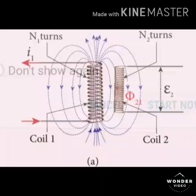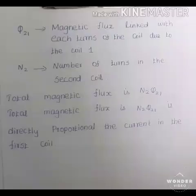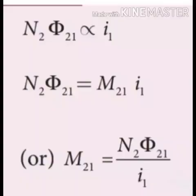Consider two coils placed close to each other. The current passes through the first coil, producing a magnetic field and magnetic flux in the second coil. Let Φ₂₁ be the magnetic flux linked with each turn of coil 2, and N₂ be the number of turns in the second coil. Total magnetic flux = N₂·Φ₂₁, which is directly proportional to the current I₁ in the first coil. Removing the proportional sign and adding a constant: N₂·Φ₂₁ = M₂₁·I₁. Therefore, M₂₁ = N₂Φ₂₁/I₁, where M₂₁ is the mutual inductance of the coil.